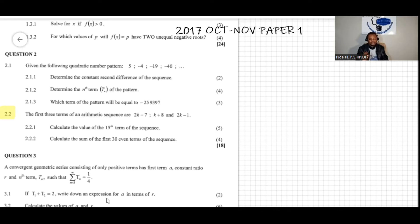Question 2.2.1 says calculate the value of the 15th term of the sequence. I'm gonna write the question here, 2.2.1 we want T15. To find the value of T15, now how can we do that?